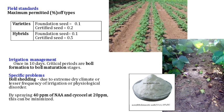Regarding field standards: for varieties, the maximum permissible off-type limit for foundation seed is 0.1 percent; for certified seeds it is 0.2 percent. For parental line multiplication (foundation series), the maximum permissible off-type limit is 0.1 percent; for certified seed it is 0.5 percent. Irrigation is once in 10 days; the critical period is from boll formation to boll maturity, during which adequate soil moisture must be ensured.